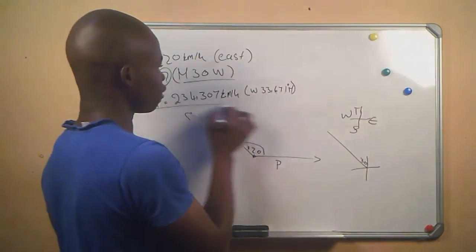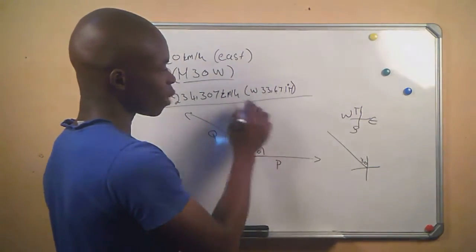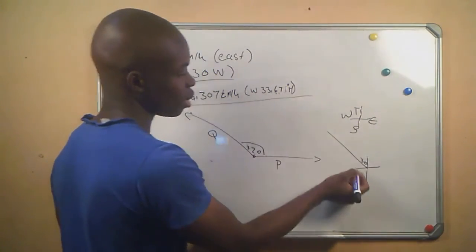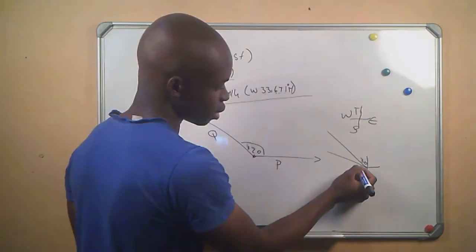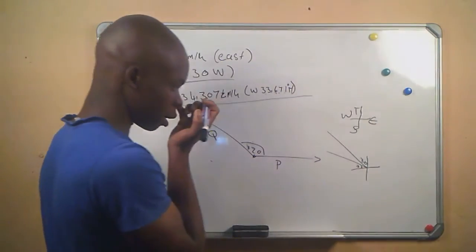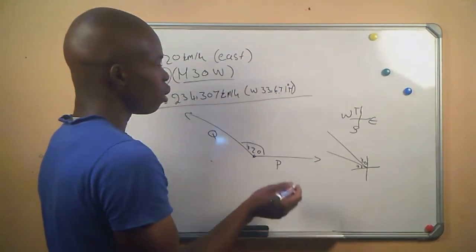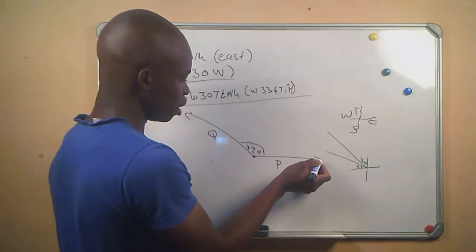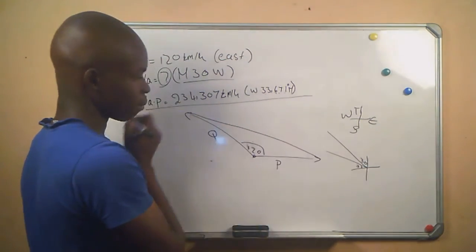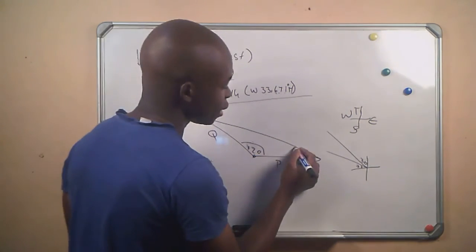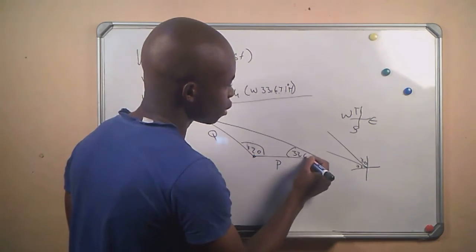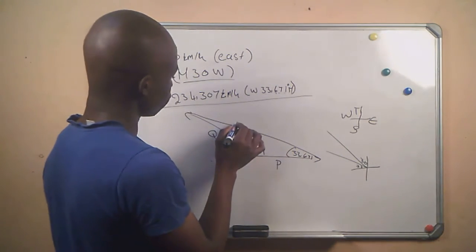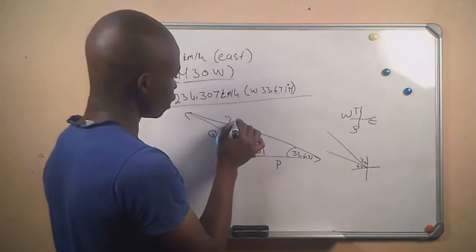And then they gave us the relative velocity. They say it is west, coming from the west, 33.671, and then it will be here. The 33 will be something like this, and then we can tell that this relative velocity will be here. And then the 33.671 will be here. We are given the magnitude of this relative velocity.